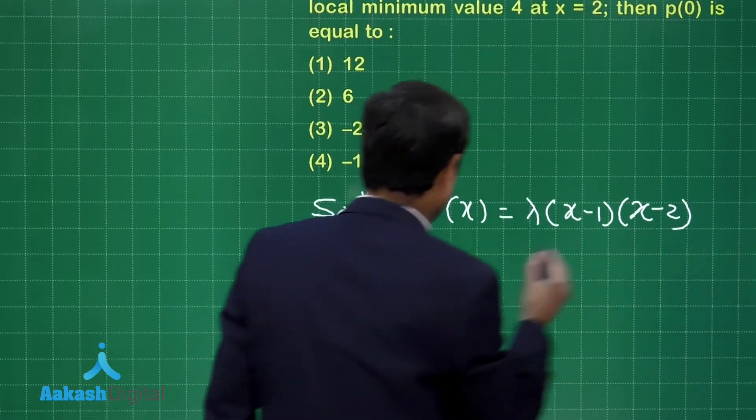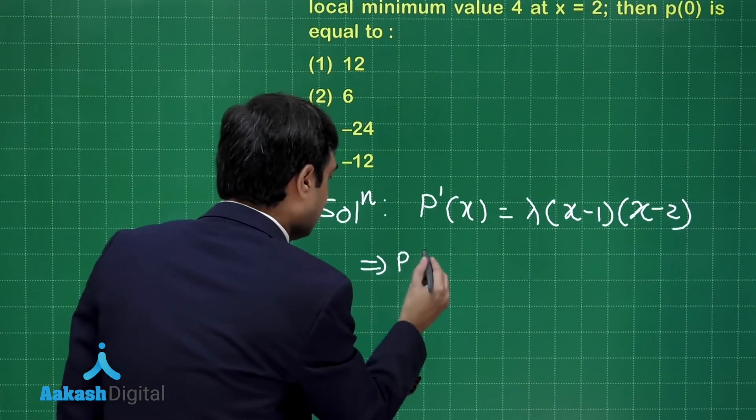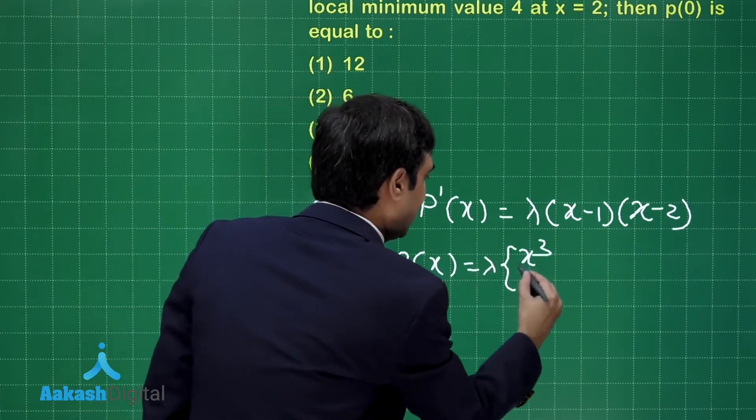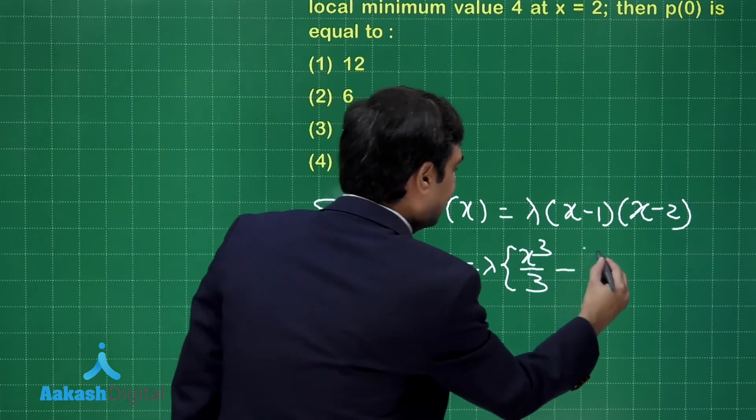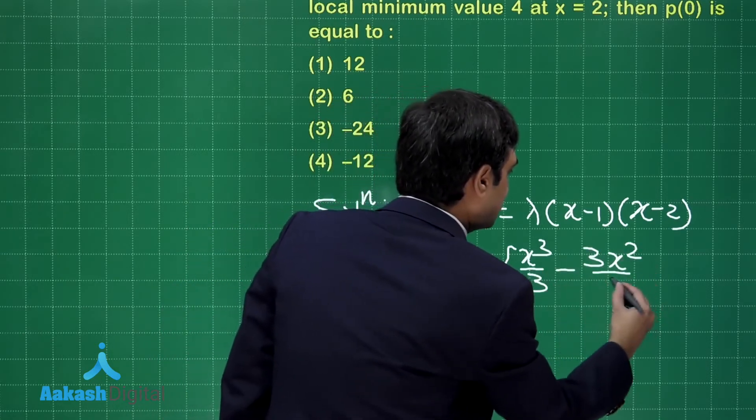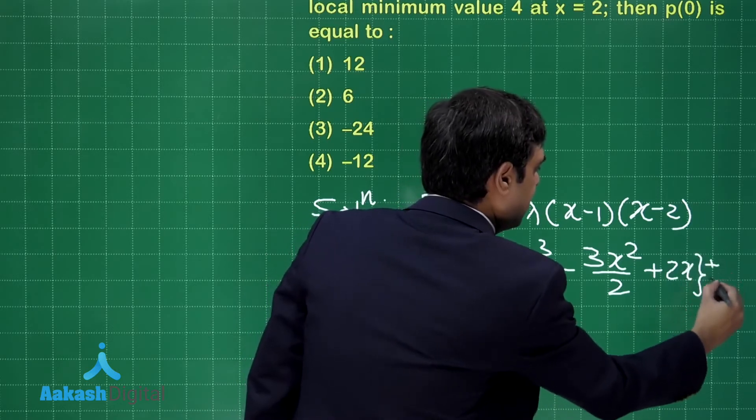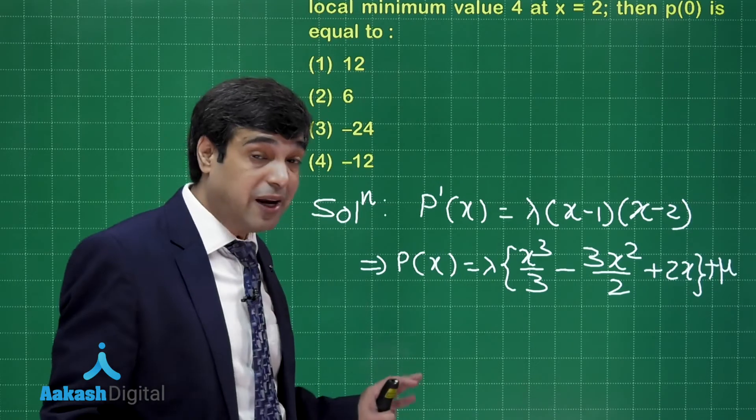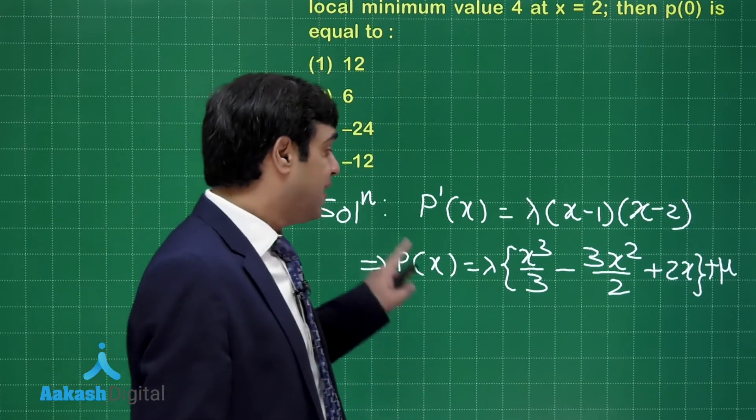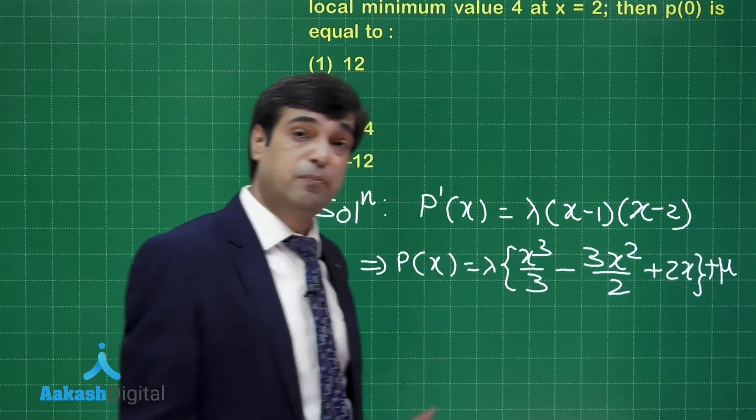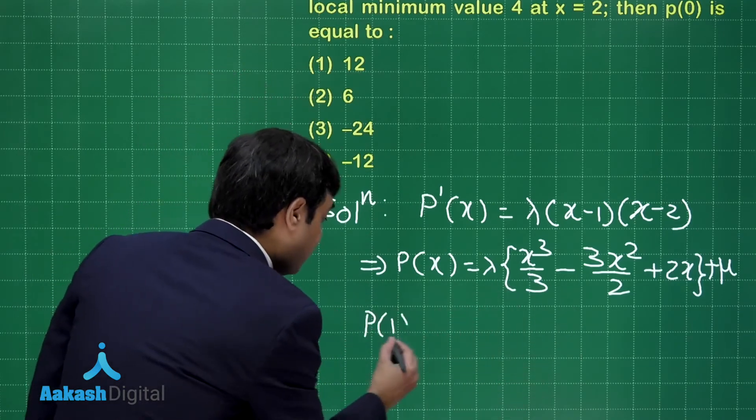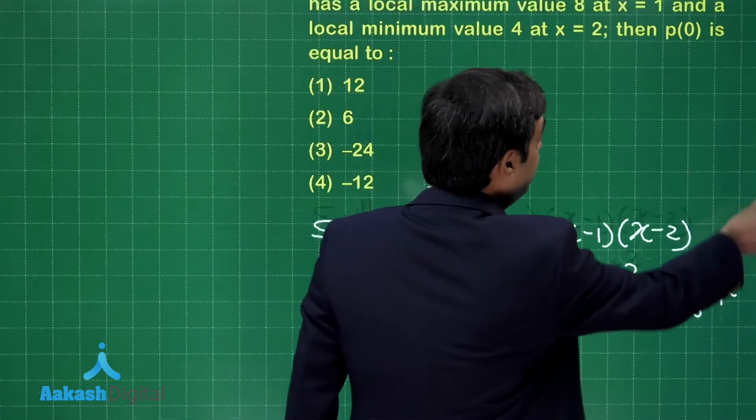Now just integrate. We have p(x) = λ(x³/3 - 3x²/2 + 2x) + μ, where μ is another constant of integration. The question is asking find p(0), that is, they are asking for the value of μ.